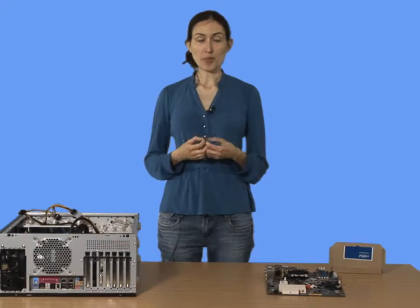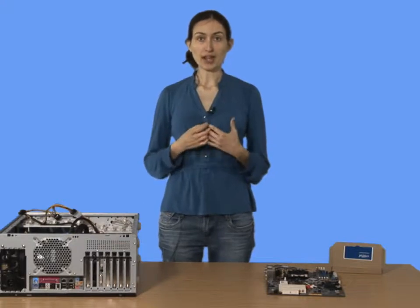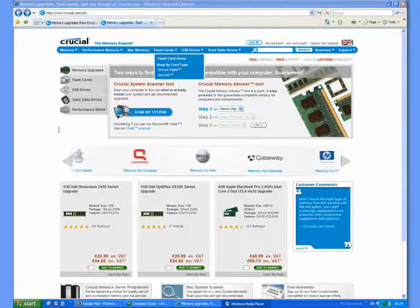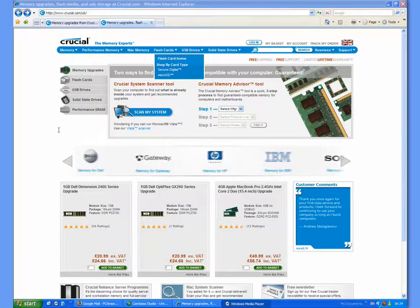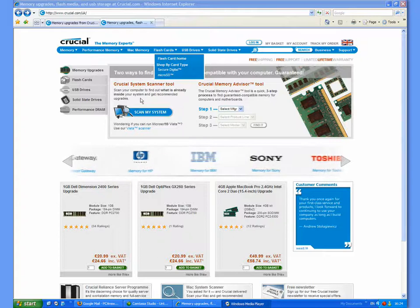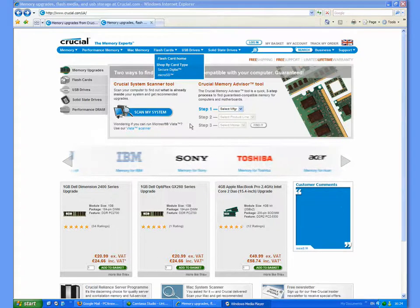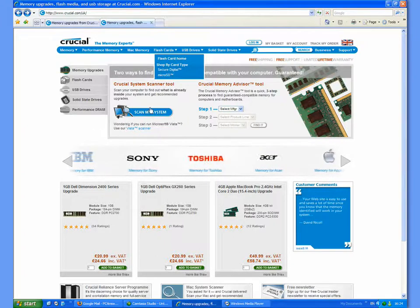Fortunately, there's a software program that will do this for you, and I'll show you how to do that now. The Crucial website has a special system scanner tool that will scan your system and work out what kind of RAM upgrade is compatible with your computer. So here's the screen. Just click on scan my system.